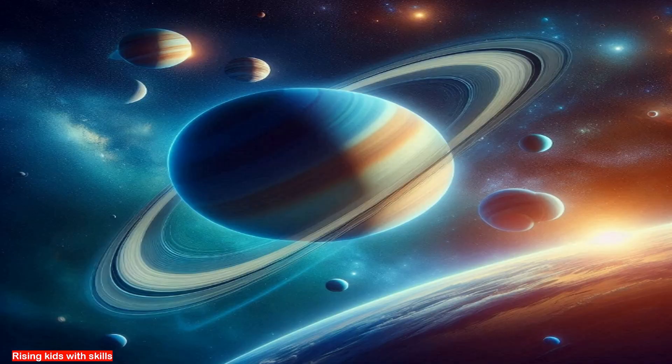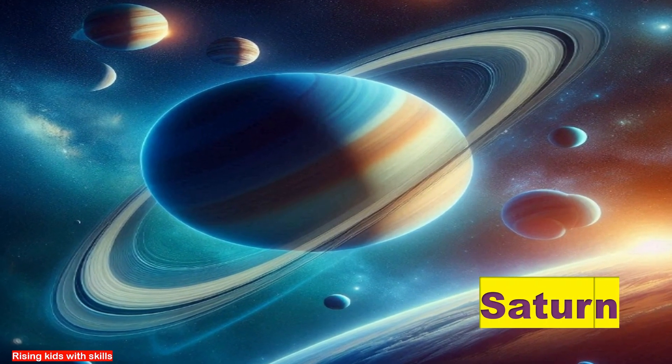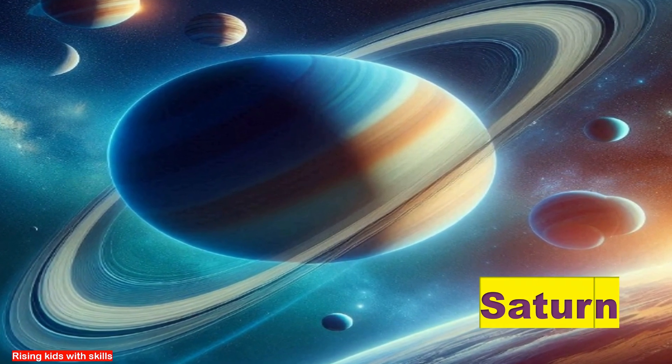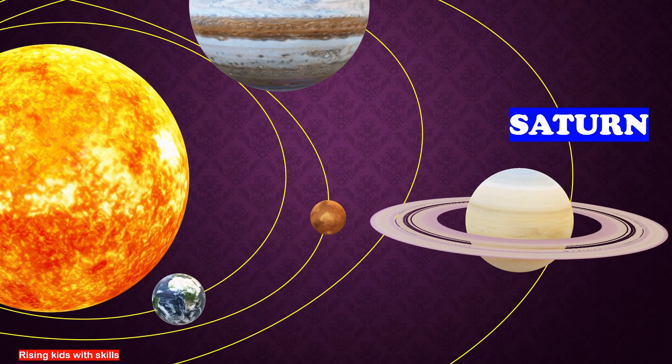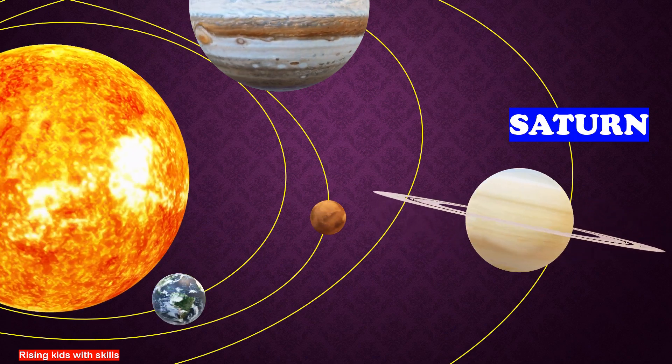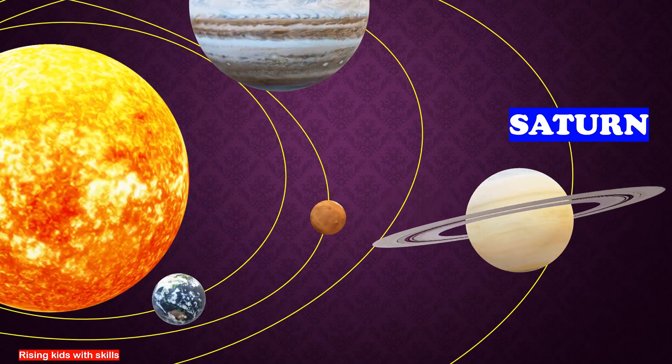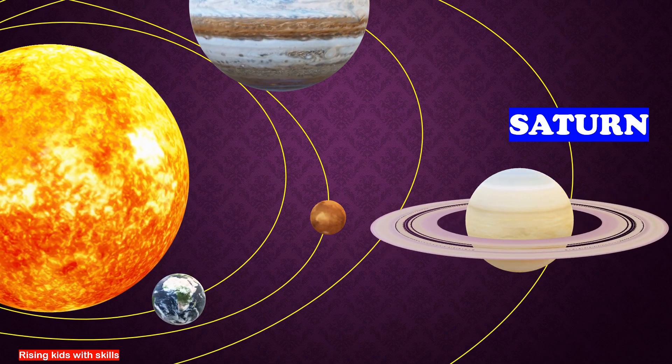This is Saturn, the sixth planet of the solar system. It is famous for its beautiful rings made of ice and rocks. Saturn is also known for its many moons like Titan. Titan has lakes made of methane. Saturn is almost as big as Jupiter but much lighter.